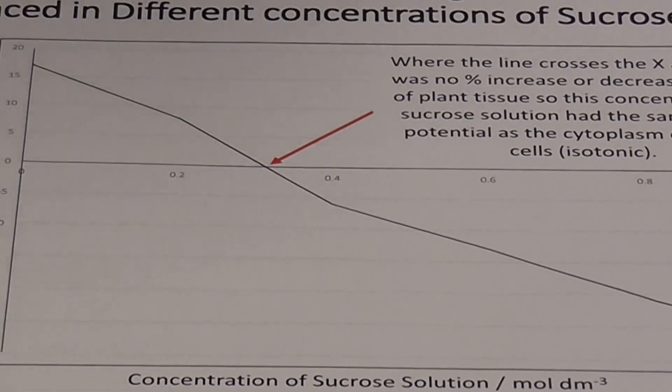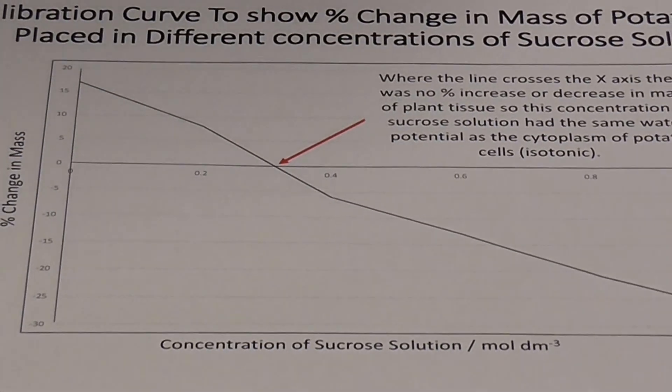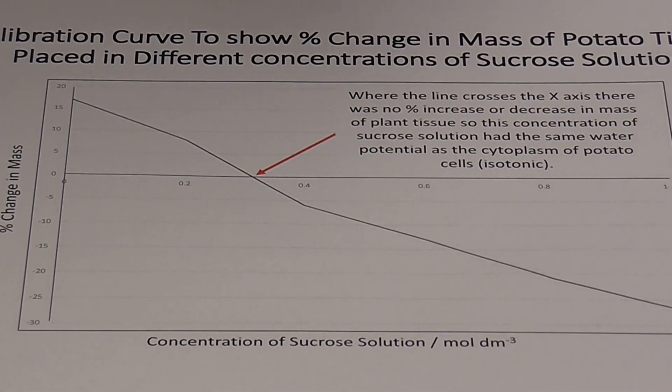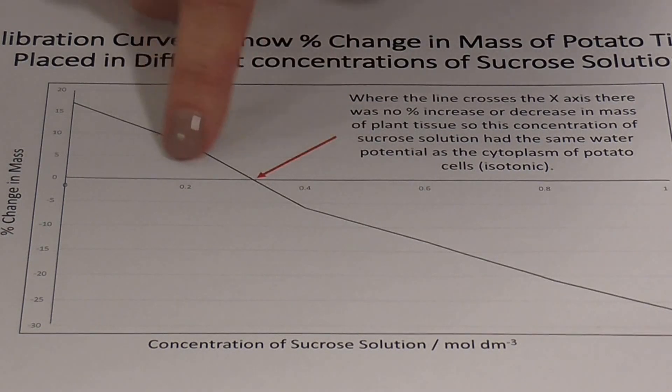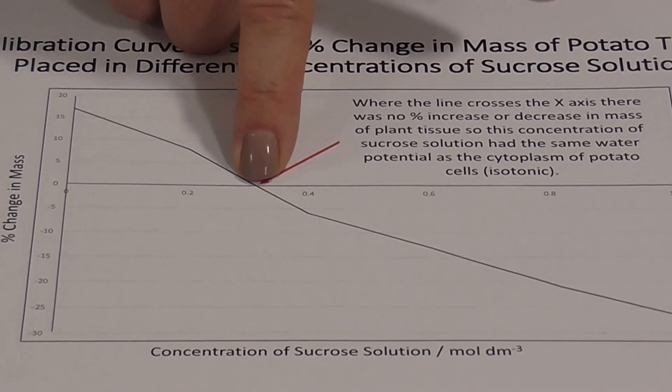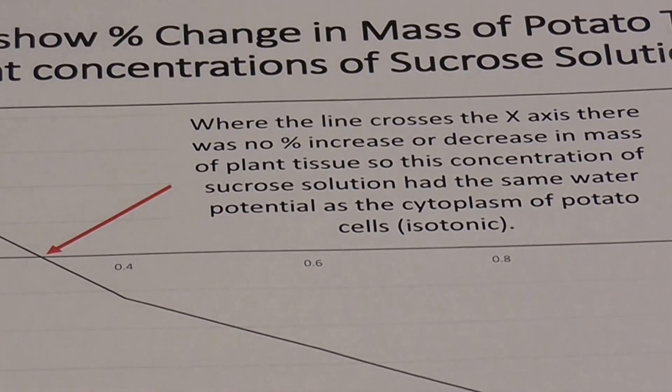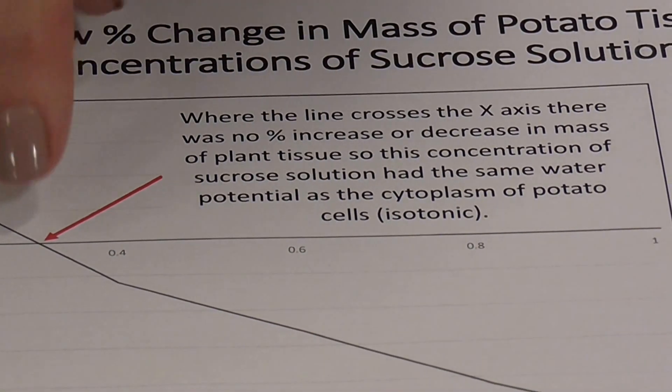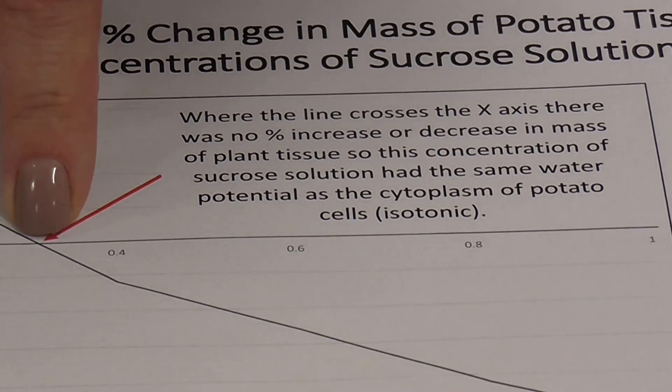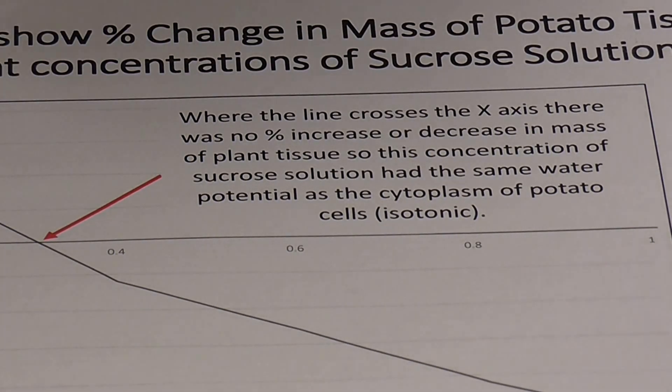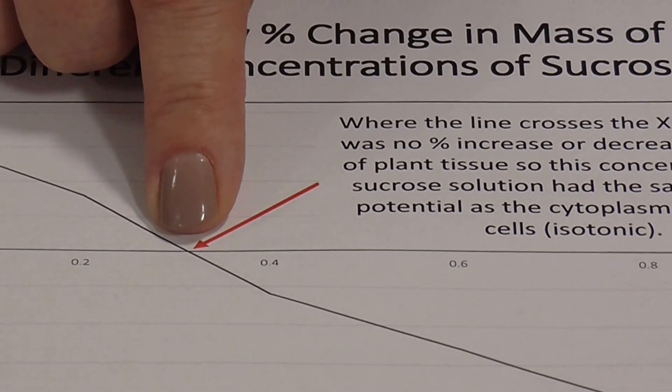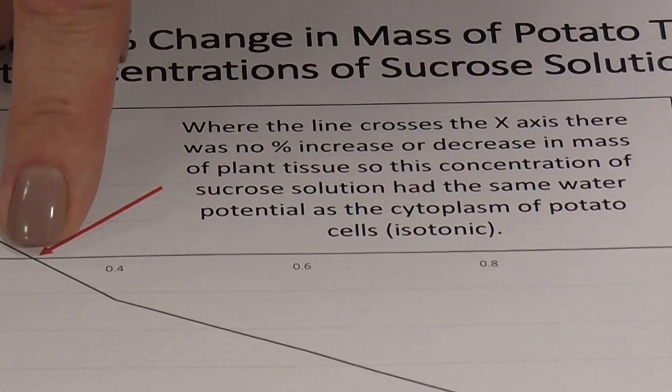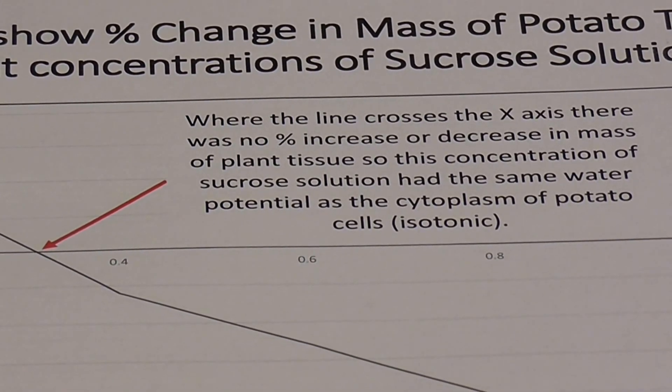Now this is what's called a calibration curve. When we calibrate something, we give it value. So from this curve, we can actually work out the water potential of the potato tissue, the cytoplasm of those potato cells. And what we're looking for is the point at which our line crosses the x-axis. And there it is. That is the point at which the potato tissue did not lose or gain mass. So the potato chips in the solution with that concentration of sucrose was in an isotonic solution, which means a solution with the same water potential as the chips. So you can read the concentration of the solution of the cytoplasm off there. And it is then possible to get a table where you can actually work out from concentrations of sucrose what the water potential would actually be.